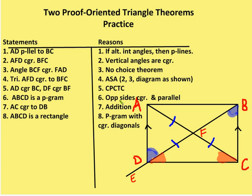Angle AFD is congruent to angle BFC because vertical angles are congruent. So AFD and BFC are congruent. Now angle BCF and angle DAF are congruent by the no-choice theorem. Triangle AFD is congruent to triangle BFC by angle-side-angle. So AD is congruent to BC by CPCTC.